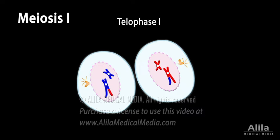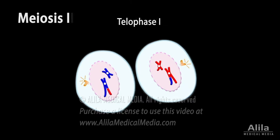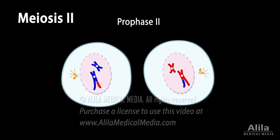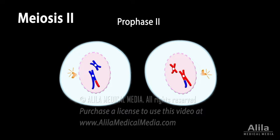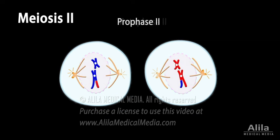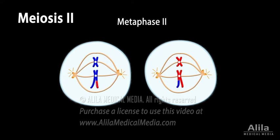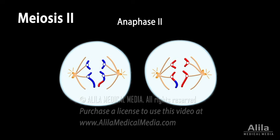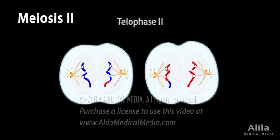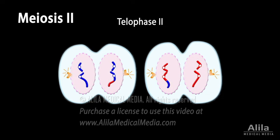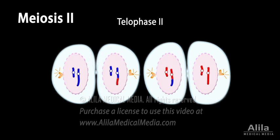Meiosis 2 is basically a mitotic division of the haploid cells produced in meiosis 1. Its purpose is to separate the sister chromatids. In prophase 2, nuclear membranes again disintegrate and a new spindle forms. The chromosomes align on the equator of the cell in metaphase 2, and the sister chromatids separate in anaphase 2. New nuclear envelopes form and cytokinesis follows in telophase 2.